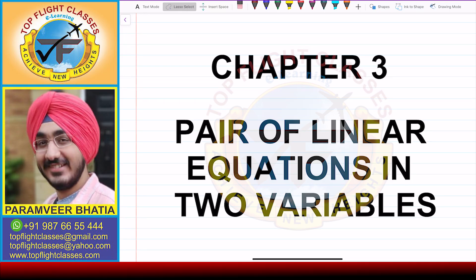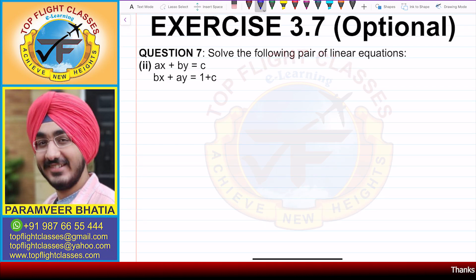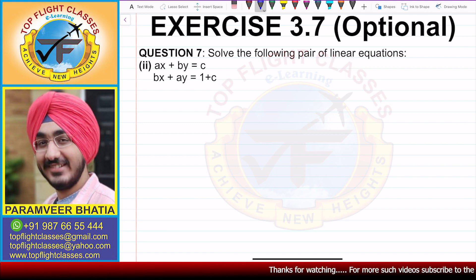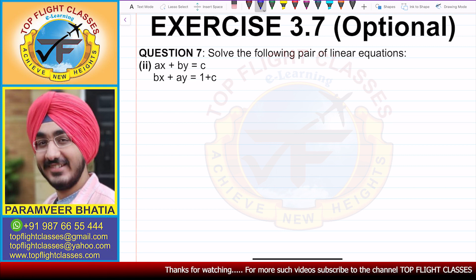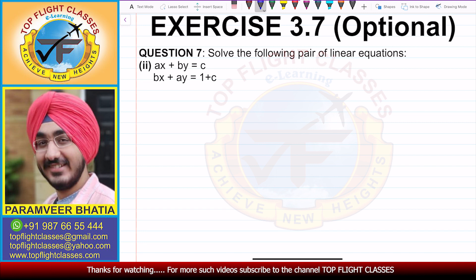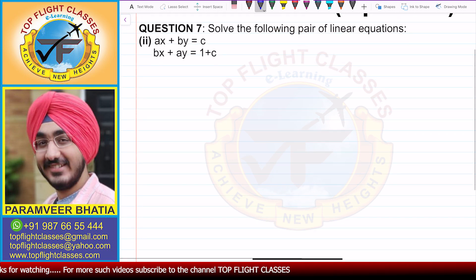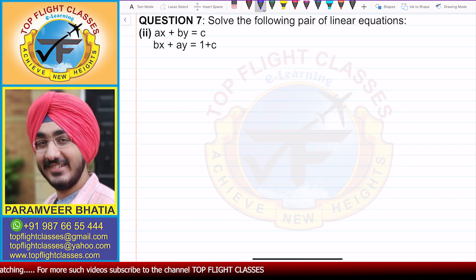Hey guys, welcome to my channel Top Flight Classes. In this video we'll solve the second part of question number seven of exercise 3.7, which is the optional exercise. Question number seven says: solve the following pair of linear equations. The pair is ax plus by equal to c, and bx plus ay equal to 1 plus c. To solve this we'll use the elimination method.